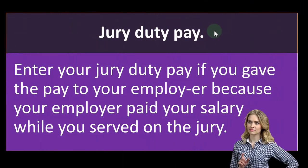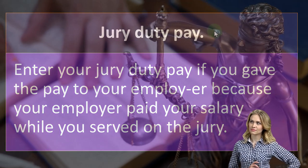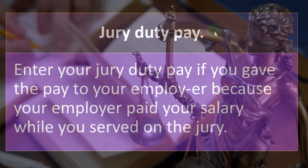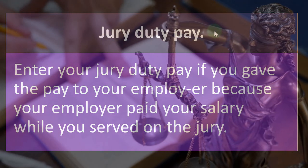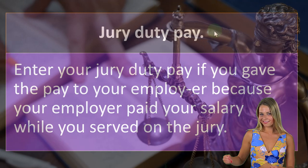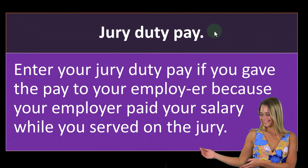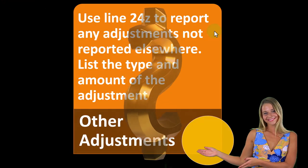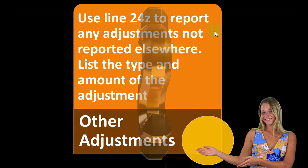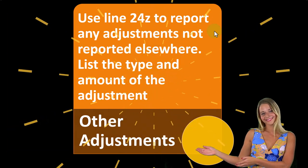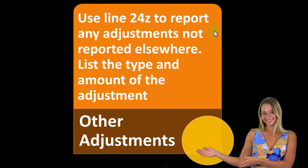Enter your Jury Duty pay if you gave the pay to your employer because your employer paid your salary while you served on a jury. They said they're going to pay you, so they don't want you to get double paid — they're already paying you, so you give them the money. That means you didn't really get double income; you just got paid your normal income, but instead of going to work, you went to Jury Duty.